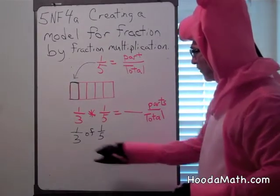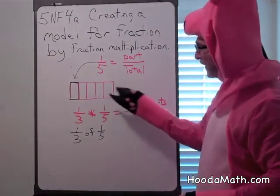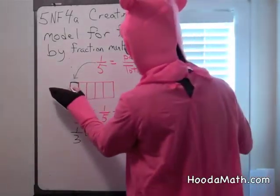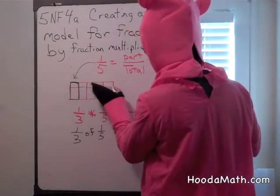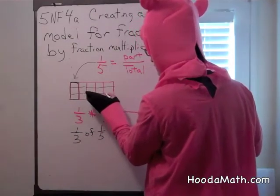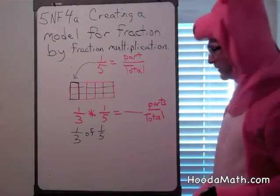So first, 1/3 means we're going to divide each of the five parts into three pieces. So there's a total of 15 pieces.